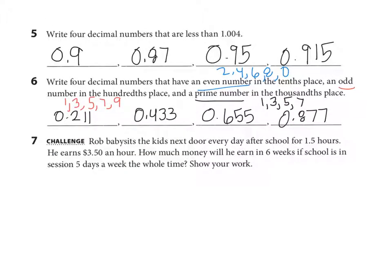Looking at the challenge, it says Rob babysits the kids next door every day after school for 1.5 hours. He earns $3.50 an hour. How much money will he earn in 6 weeks if school is in session 5 days a week the whole time? Show your work. Let's look at some key information here. He works for 1.5 hours after school. He earns $3.50 an hour. It's asking how much money will he earn in 6 weeks? If school is in session 5 days a week the whole time.